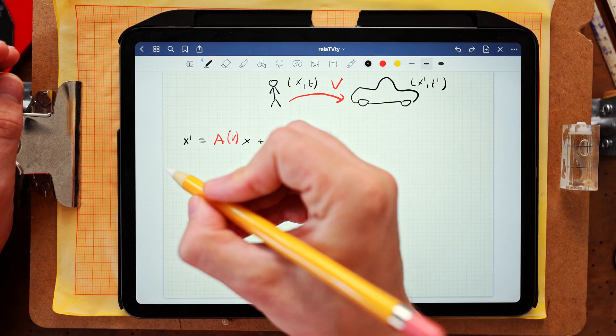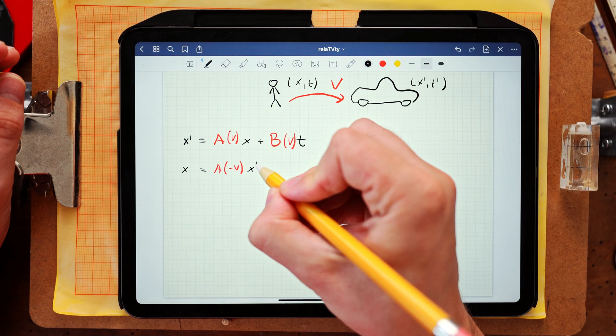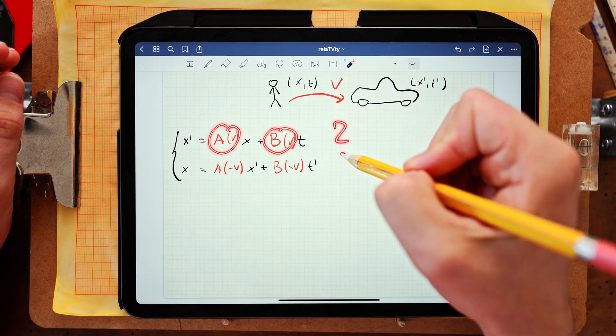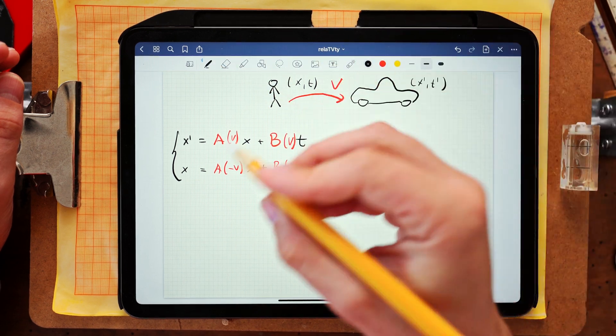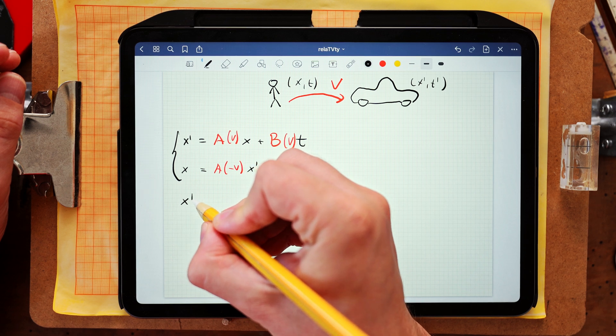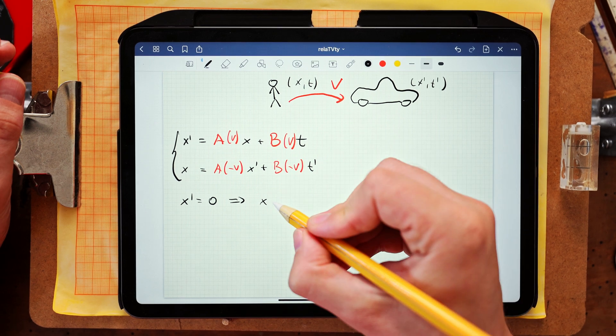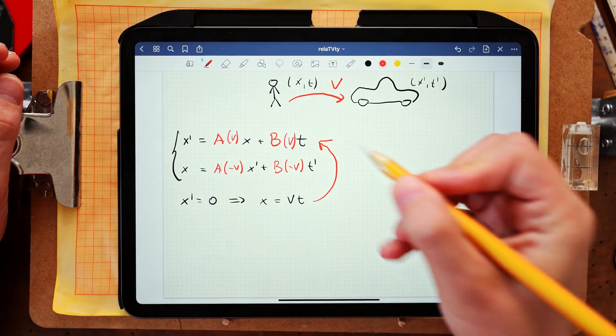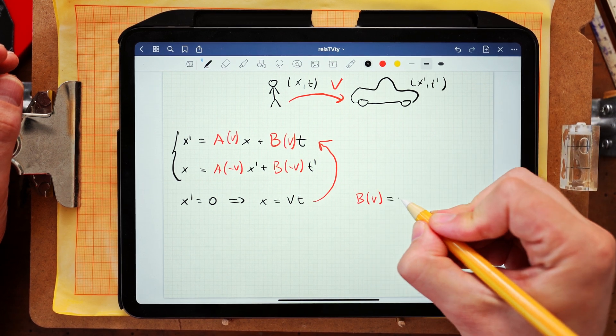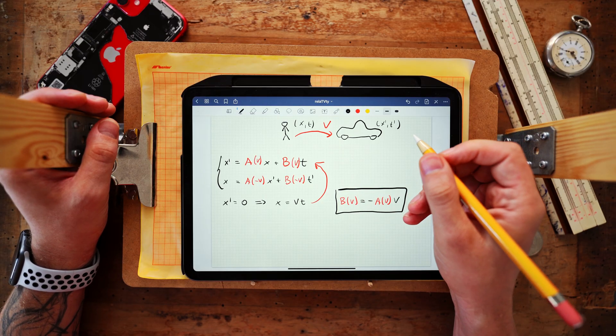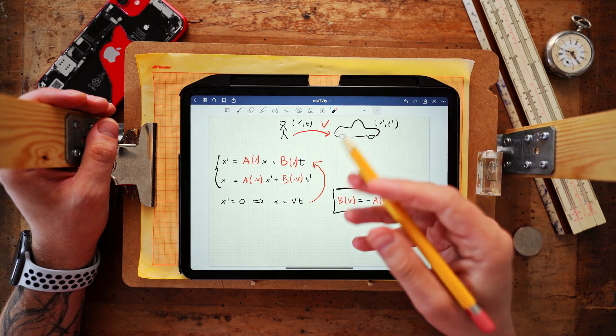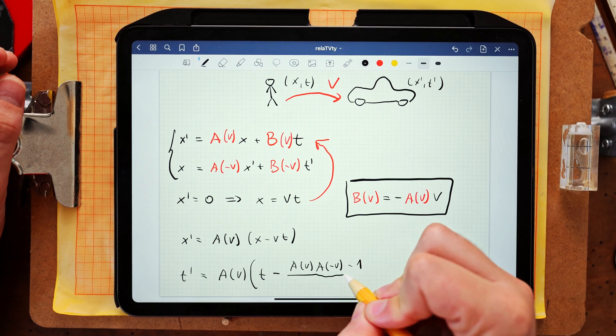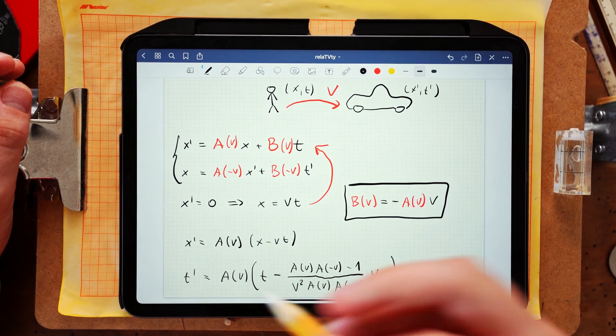Now because of the principle of relativity we can immediately write the inverse transformation which involves a simple sign flip of the velocity. And now our goal is to determine the most general form of those coefficients a and b. And what we can do right away is to find the relation between those two by using the definition of the relative velocity v. So the origin of the moving frame of reference given by x' equals 0 has to move in the other frame of reference with a constant velocity v. So it must be given by the equation x equals v times t. And if you take those two equations and plug them into the first transformation formula we find the following relation between the coefficients b and a. And this finding allows us to rule out the unknown coefficient b from the equations and all that will be left to determine is the unknown coefficient a. And before we proceed let us first rearrange the equations and solve them for x' and t'. And now we are ready to look for the unknown coefficient a.